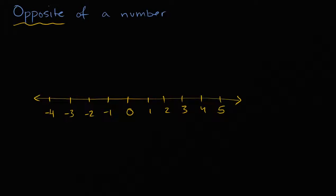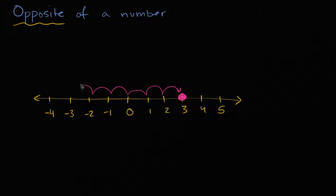So let's pick one of these numbers — let's say the number three. What is going to be the opposite of the number three? Well, the opposite of a number is a number that's the same distance from zero, but on the other side. So three is three to the right of zero — one, two, three — so its opposite is going to be three to the left of zero — one, two, three. So the opposite of three is negative three.